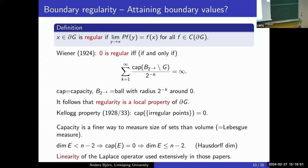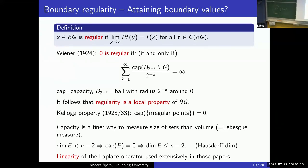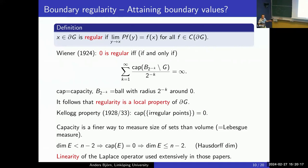Exactly how capacity is defined I won't go into — that's a bit technical. The important thing is that we have an if-and-only-if condition. One consequence is that regularity is a local property of the boundary: if two domains look the same around a point but differ far away, the Wiener sum terms are exactly the same from some index onwards, and the first finitely many terms don't affect convergence.